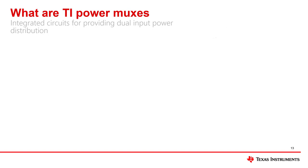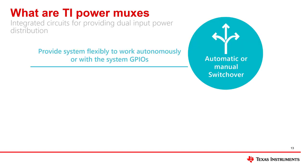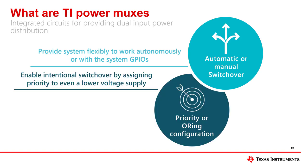Now that we've covered what a power mux is, what are TI power muxes and how do we fit into the categories we've discussed? TI power muxes provide both automatic and/or manual switchover to provide system flexibility, to either work autonomously or with system GPIOs. TI power muxes also allow for priority or ORing configurations, which enable the user to establish a user-set switchover point and assign priority to a lower voltage supply.